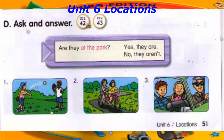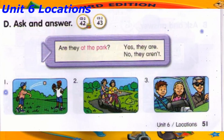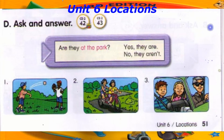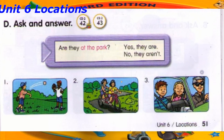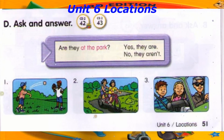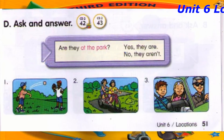Track 42. D. Ask and answer. Are they at the park? Yes, they are. Are they at the park? No, they aren't.